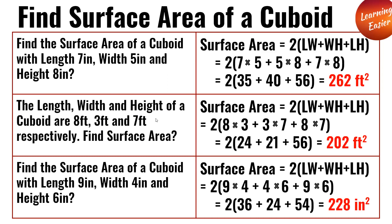Next, the length, width, and height of the cuboid are 8 feet, 3 feet, and 7 feet. Find the surface area. 2(8×3 + 3×7 + 8×7). 8 times 3 is 24, 3 times 7 is 21, 8 times 7 is 56. 2(24 + 21 + 56) is equal to 202 feet squared.